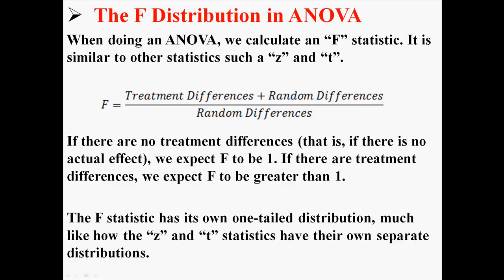The f statistic has its own one-tailed distribution, much like how the z and the t statistics have their own separate distributions. So the f distribution is always one-tailed, and our f is always going to be positive. If you get a negative f, that means you made some kind of mistake.